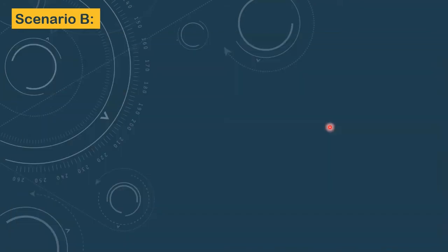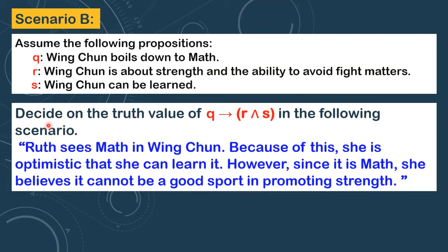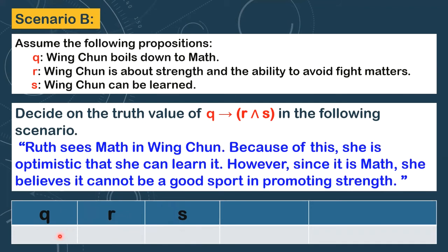Let's have another scenario — Scenario B. We still have these three propositions. We're going to decide on the truth value of if Q, then R and S. Here is our scenario: Ruth sees math in Wing Chun. Because of this, she is optimistic that she can learn it. However, since it is math, she believes it cannot be a good sport in promoting strength. Let's now get the truth value for each statement. Ruth sees math in Wing Chun — so proposition Q is true. Wing Chun boils down to math.